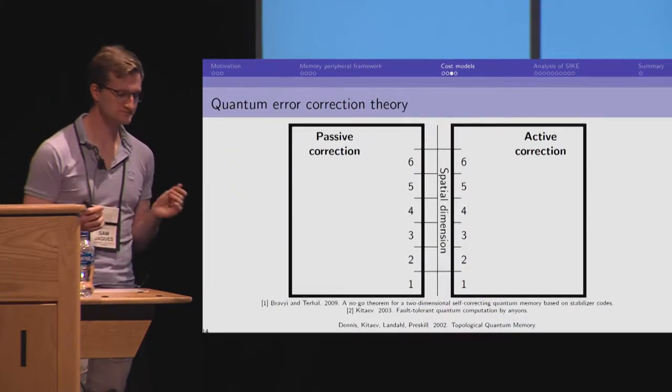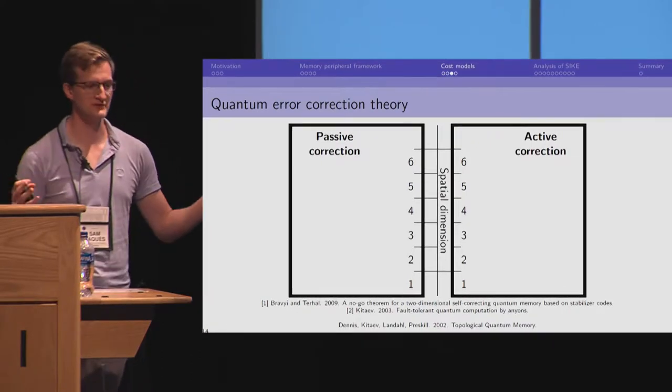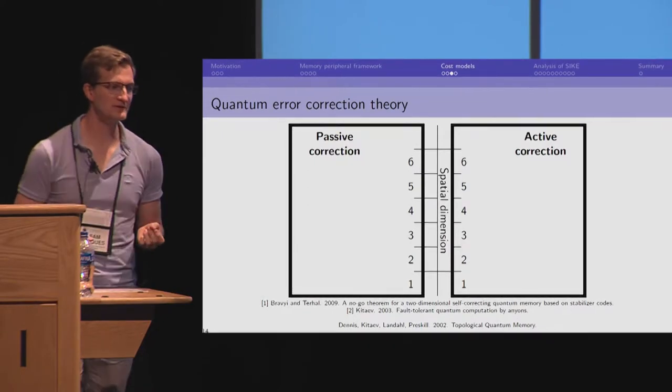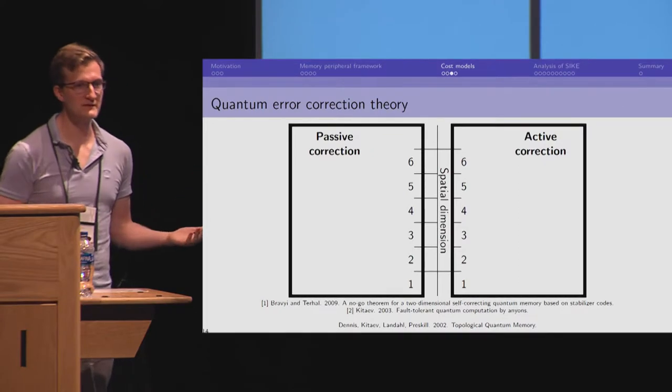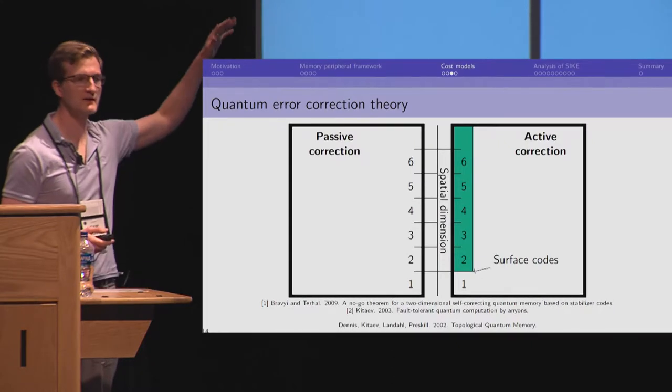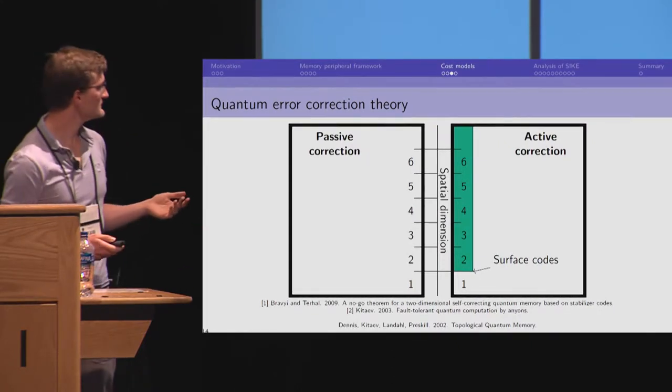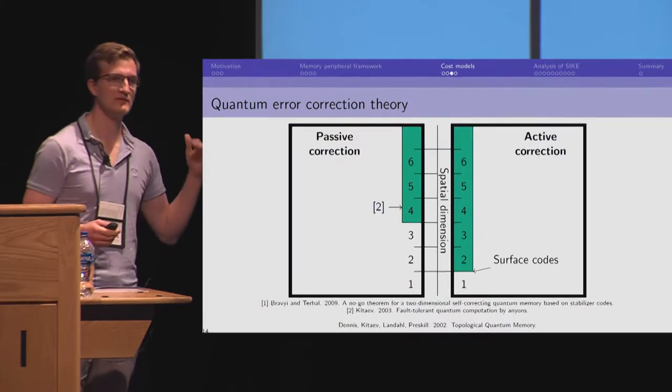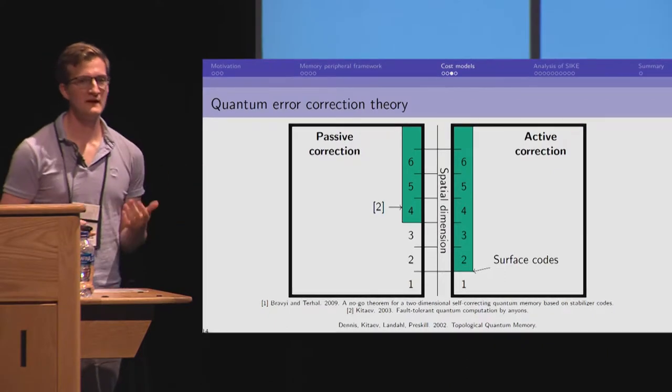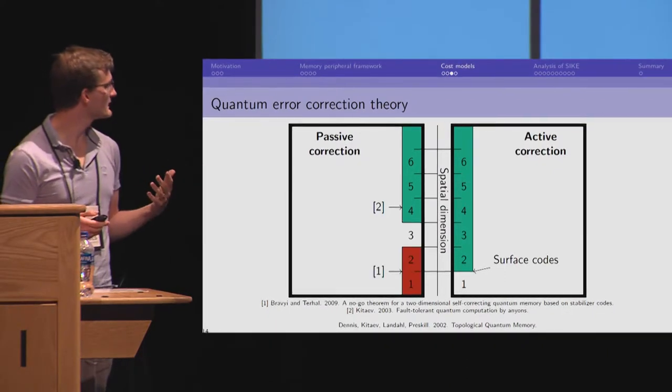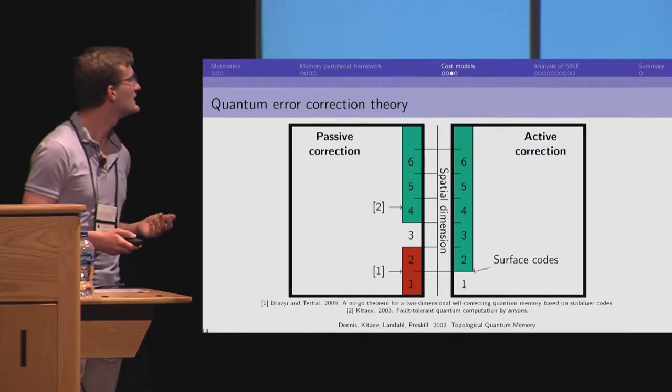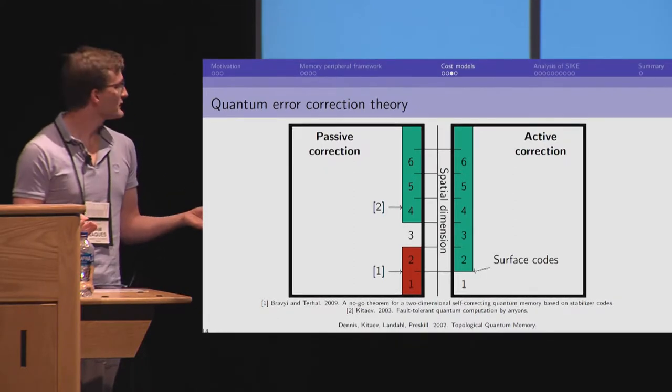So, imagine this quantum computer has a lattice of qubits in some number of dimensions. And these qubits are limited to local interactions in this lattice to try to correct their errors. And so, can we build different kinds of memory in this? We know how to build actively corrected memory in dimensions two and higher. Surface codes are an example of this. We know how to build passively corrected memory in dimensions four and higher with a similar construction to surface codes. But dimension three and under is an open problem. And there are actually impossibility results for a large family of error correcting codes that includes surface codes.